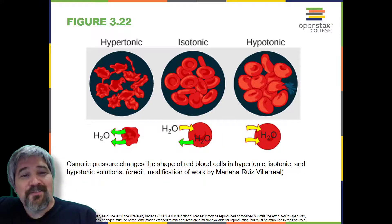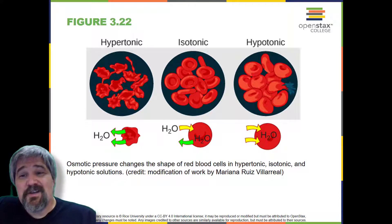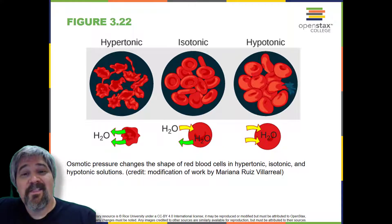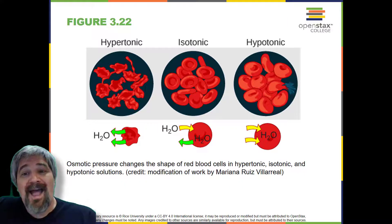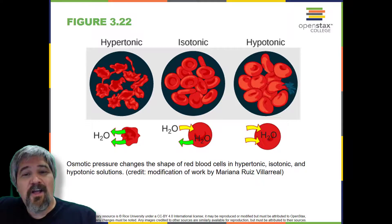In an isotonic solution, the extracellular fluid has the same osmolarity as the cell. If the concentration of solutes on the cell matches that of the extracellular fluid, there will be no net movement of water into or out of the cell. Blood cells in hypertonic, isotonic, and hypotonic solutions take on characteristic appearances.